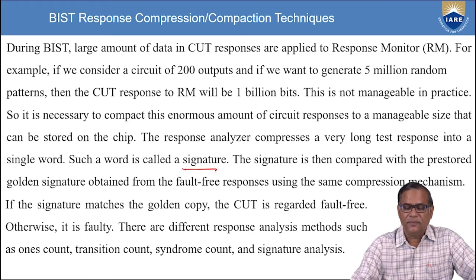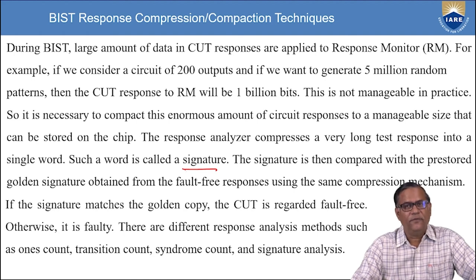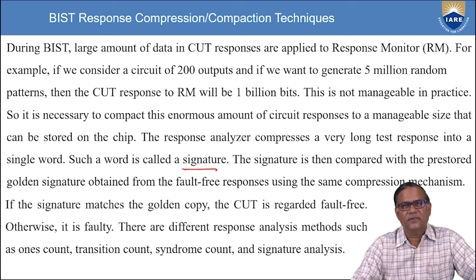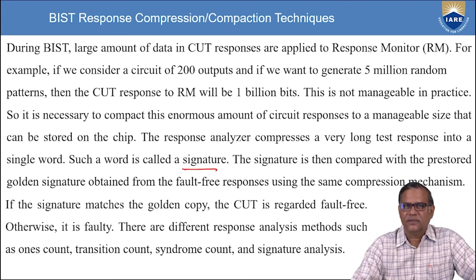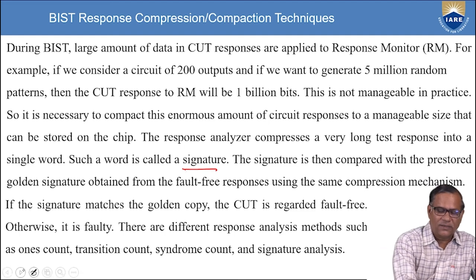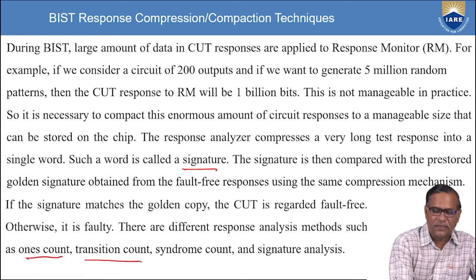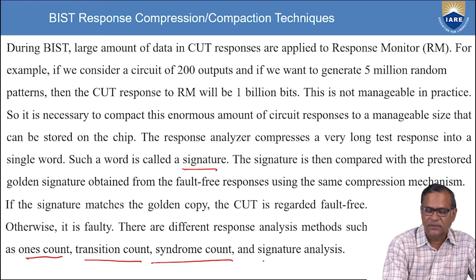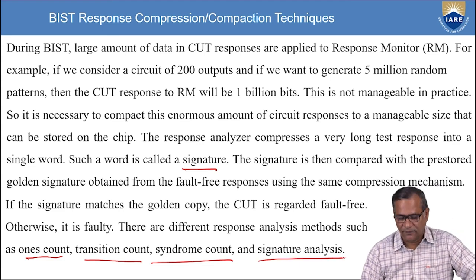The signature is then compared with the pre-stored golden response obtained from fault-free responses using the same compression mechanism. If the signature matches, the circuit is regarded as fault-free; otherwise the circuit is considered faulty. There are different response analysis methods: ones count, transition count, syndrome count, and signature analysis.